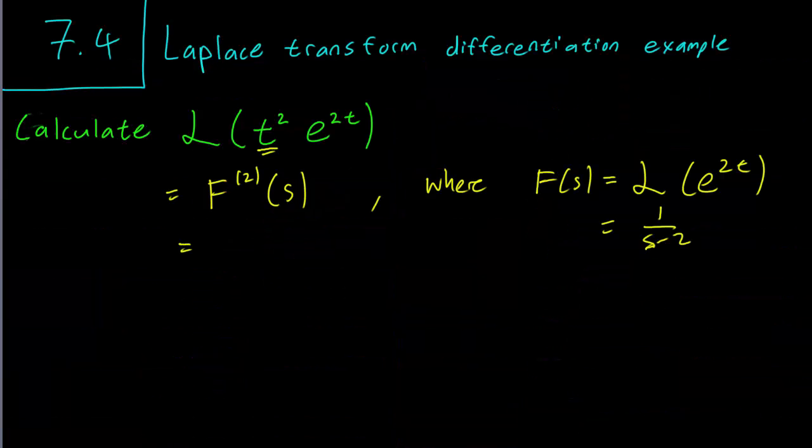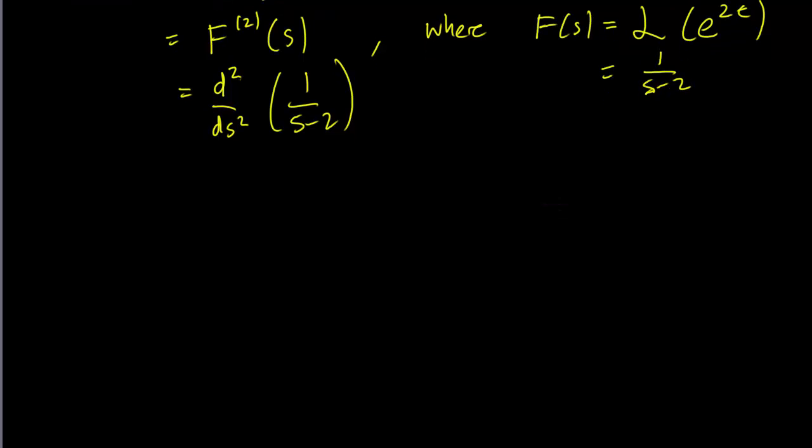So this means that we need to take the second derivative of 1 over s minus 2, and the first derivative of 1 over s minus 2